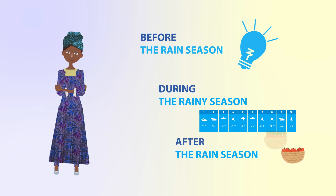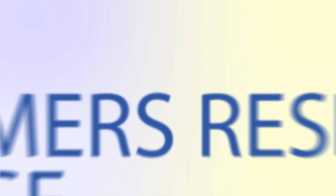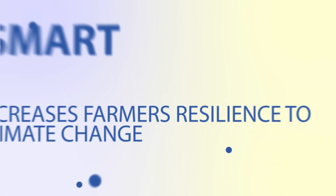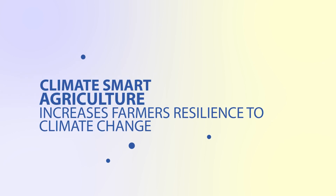After the rain season, crops and pasture are usually at maturity stage and ready for harvesting, storage, and transportation to the markets. There might be challenges associated with post-harvest handling and management to ensure food safety and quality. Climate Smart Agriculture increases farmers' resilience to climate change.